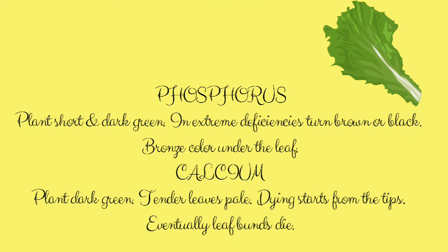During phosphorus deficiency, plants will be very short and very dark green in color. When the deficiency becomes extreme, the plant wholly turns black or brown in color, and a bronze color will be seen on the underside of the leaf.